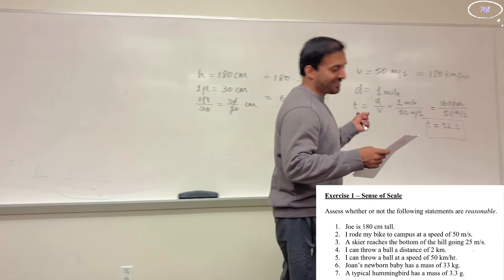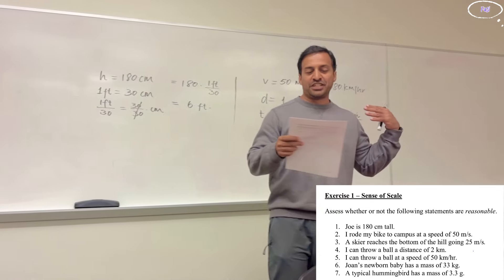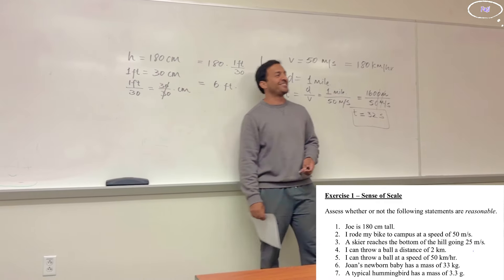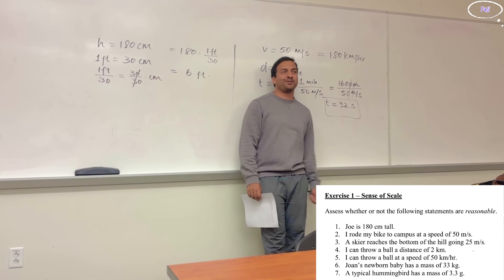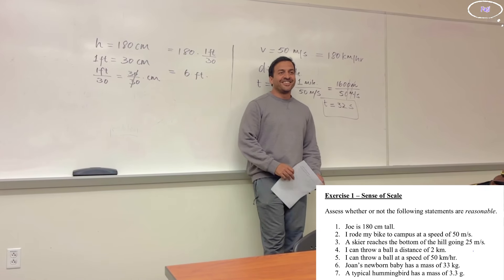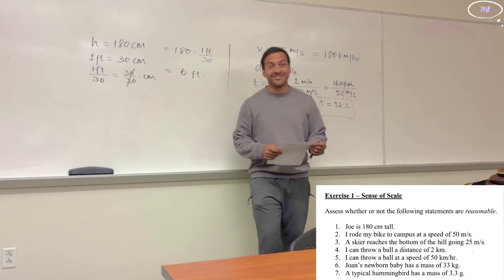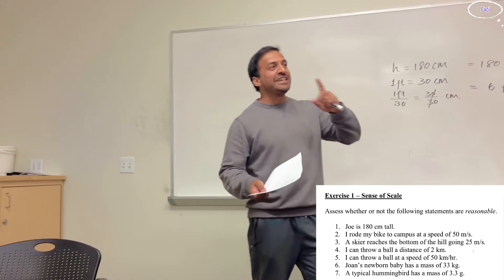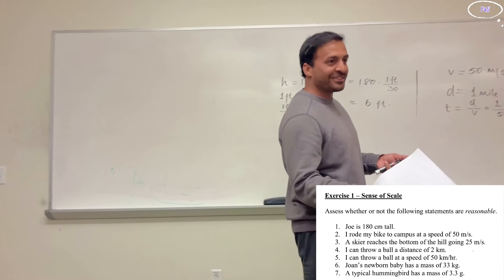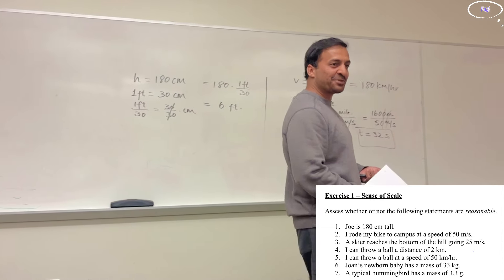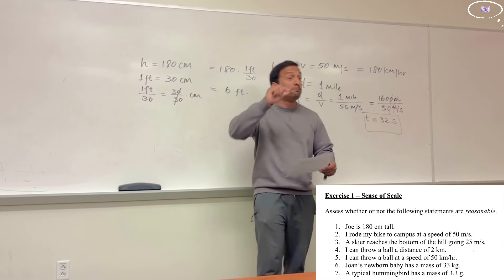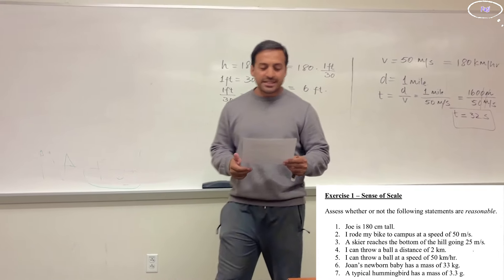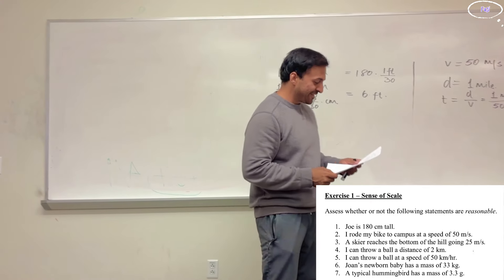The fourth one: 'I can throw a ball at a distance of 2 kilometers.' Can anyone throw a ball 2 kilometers? Even with a gun, probably not. The speeding bullet from a rifle has a speed of about 1600 meters per second — that's the muzzle speed — and even that can't throw a ball 2 kilometers. This statement doesn't make sense.